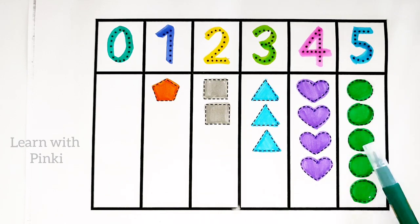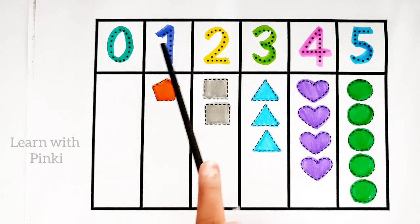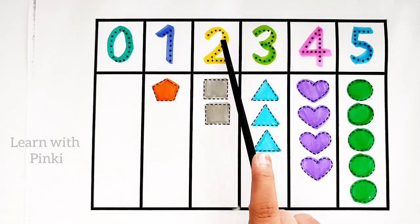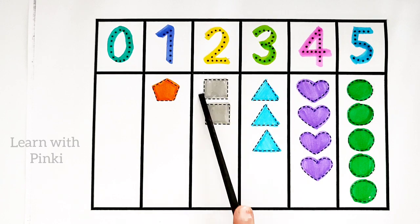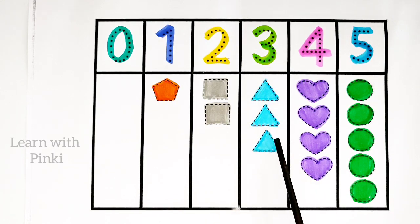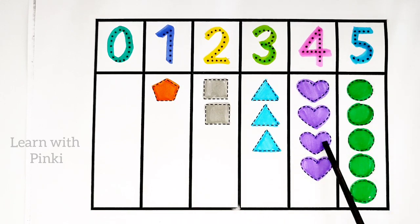0, 0 shape. Number 1, 1 pentagon. 1, 2, 2 squares. 3: 1, 2, 3, 3 triangles. 4: 1, 2, 3, 4, 4 hearts. 5: 1, 2, 3, 4, 5, 5 circles.